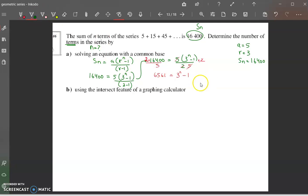So now to get rid of the negative 1, we will add 1 to both sides. Sorry, this should be a 0. So add 1 to both sides. So this gives me now 6561 equals 3 to the power of n.